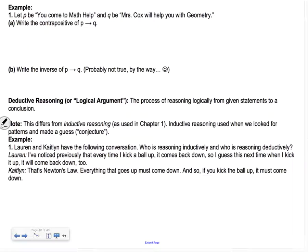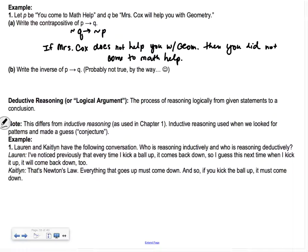Let P be you come to math help, and Q be Mrs. Cox will help you with geometry. The contrapositive of P implies Q is not Q implies not P. What that would be is if Mrs. Cox does not help you with geometry, then you did not come to math help. The inverse of P implies Q would be not P implies not Q, which is if you do not come to math help, then Mrs. Cox will not help you with geometry. The reason I said that's probably not true is because I probably would help you outside of math help. I'll help you anytime.